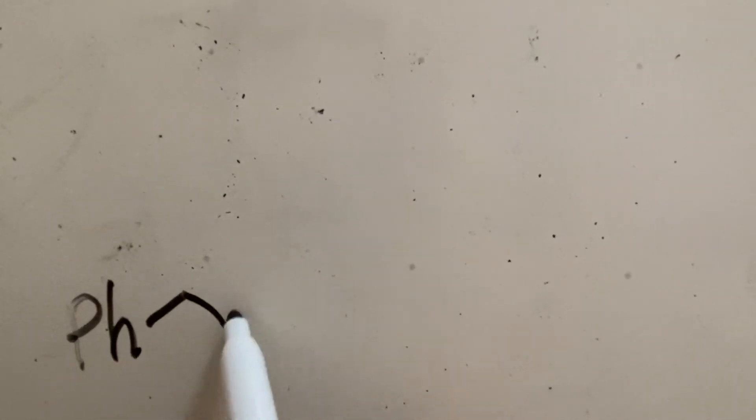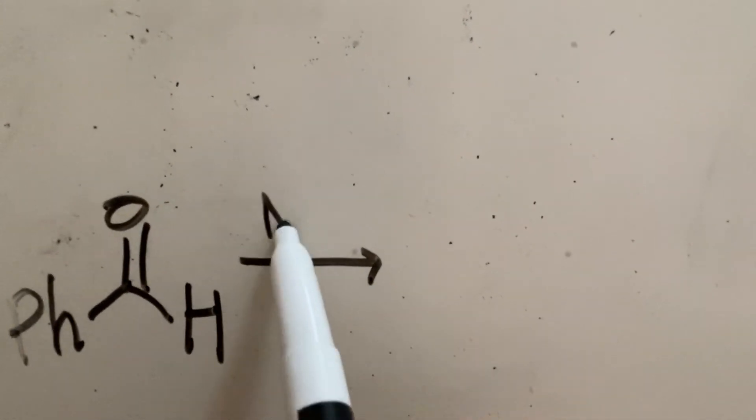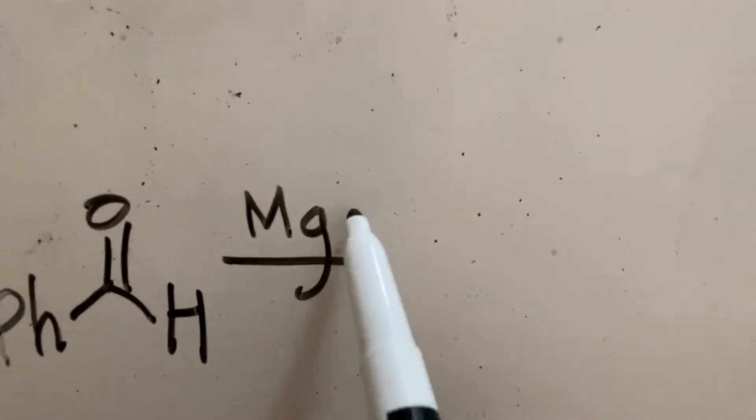This reaction utilizes radical chemistry. The first step is benzaldehyde reacts with magnesium. If you remember, magnesium has two valence electrons, so it acts as an electron donor here.